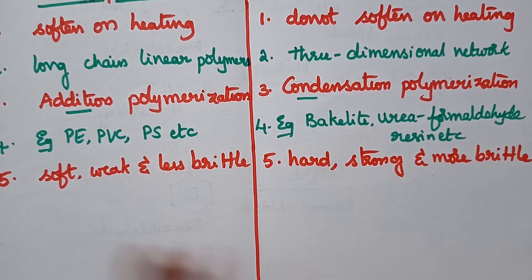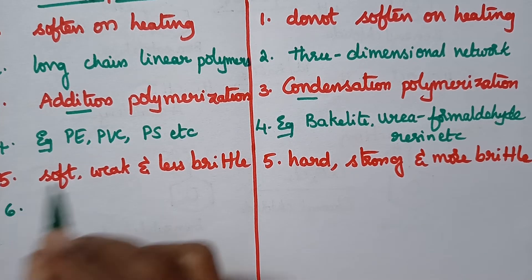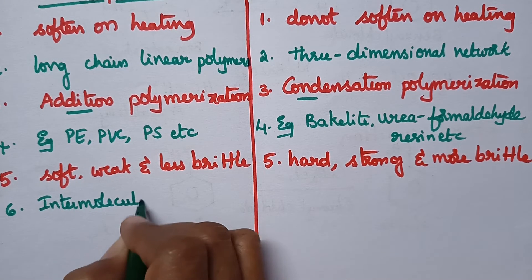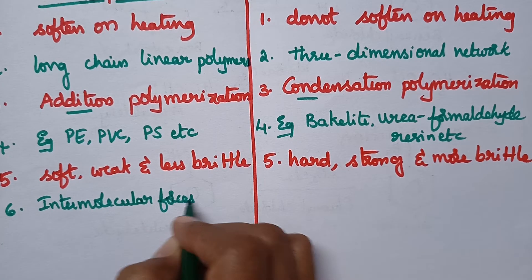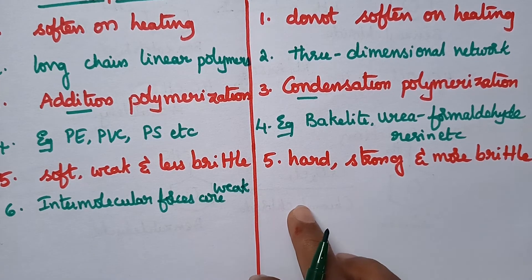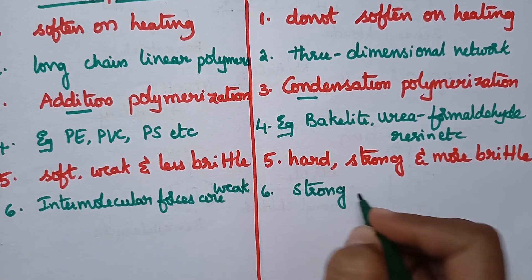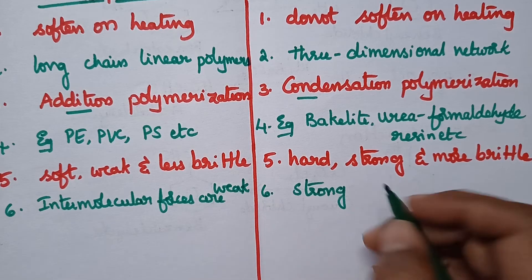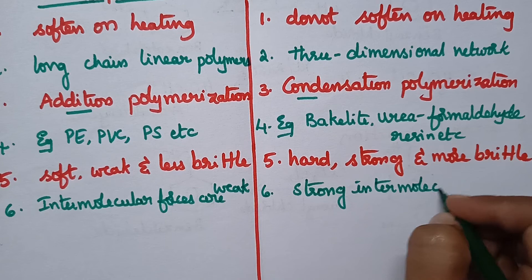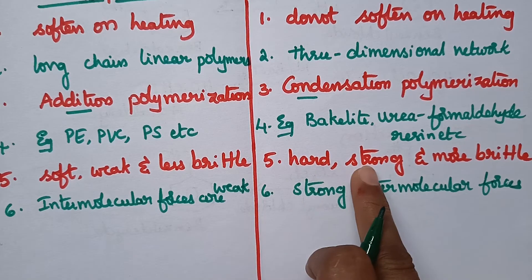When we compare the intermolecular forces, the intermolecular forces in thermoplastics are weak. But in thermosetting plastics they are somewhat strong. With the result, they become hard and strong.